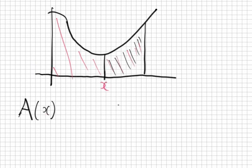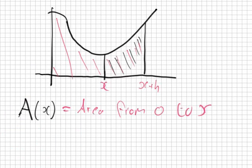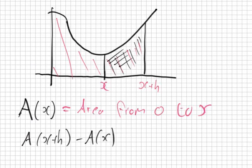This one here is x plus h. If I want this area here, that would be A(x+h) minus A(x). It would be the total area minus the other area — these are the pieces left.